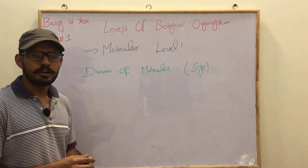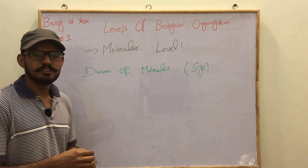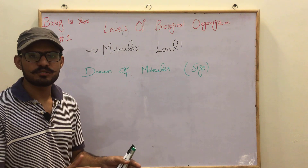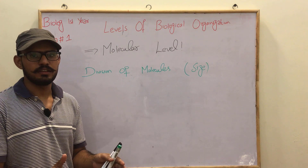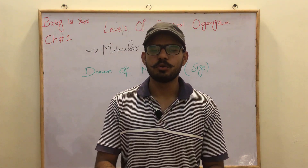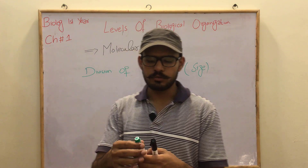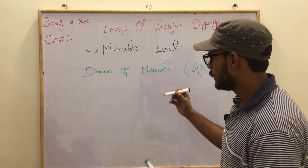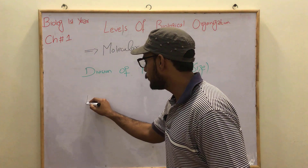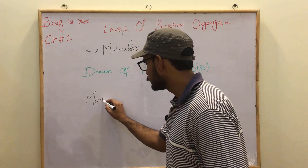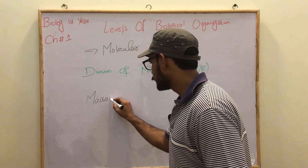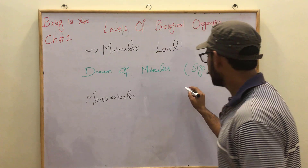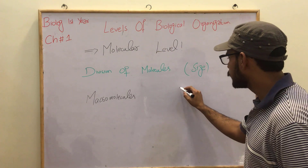The next point is the division of molecules. How can we divide molecules on the basis of size? The size of molecules — we have divided them into two pieces. First, we have macromolecules. Second, we have micromolecules.